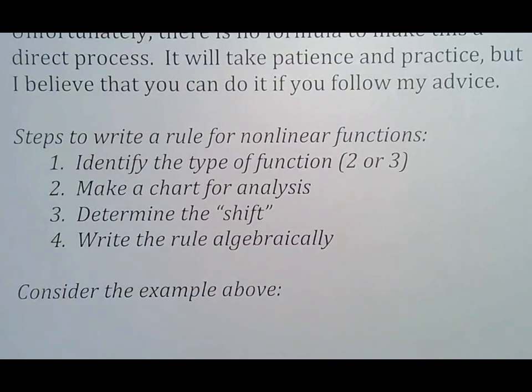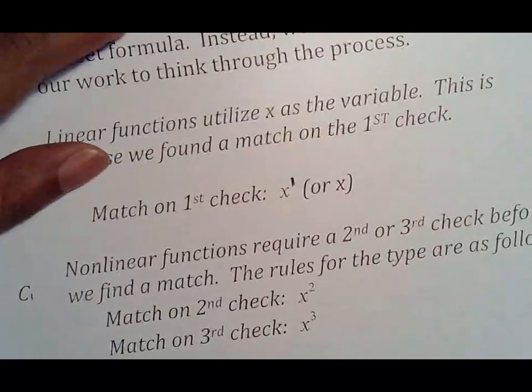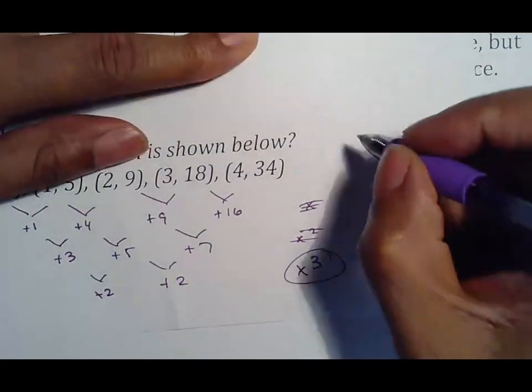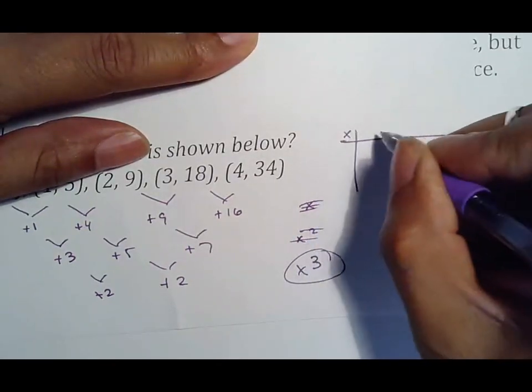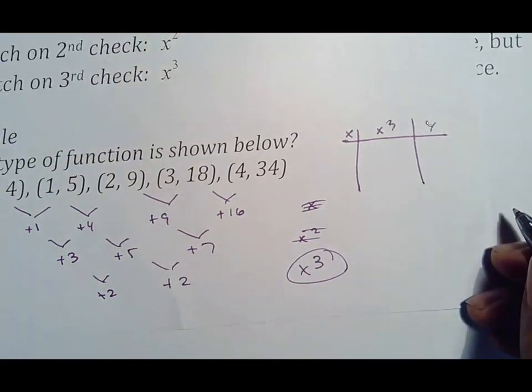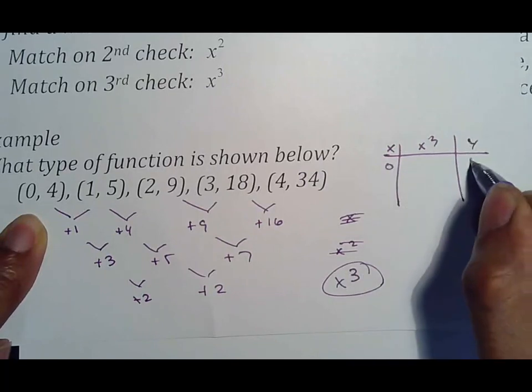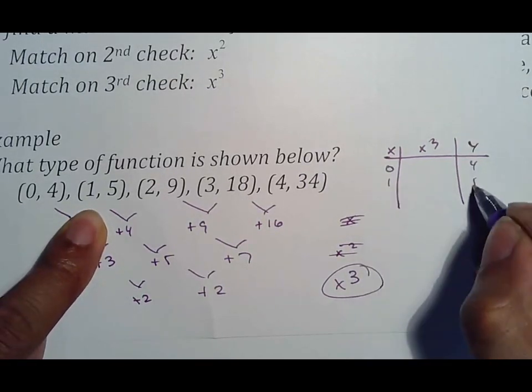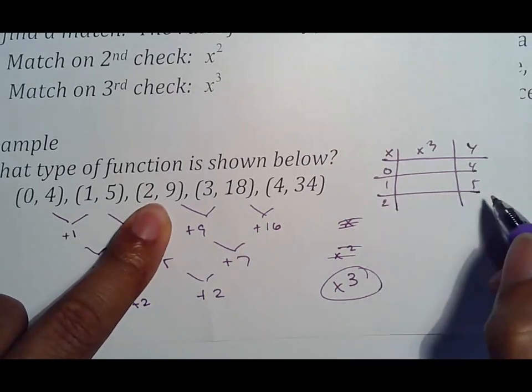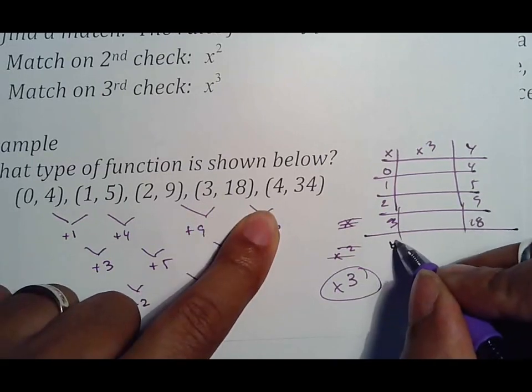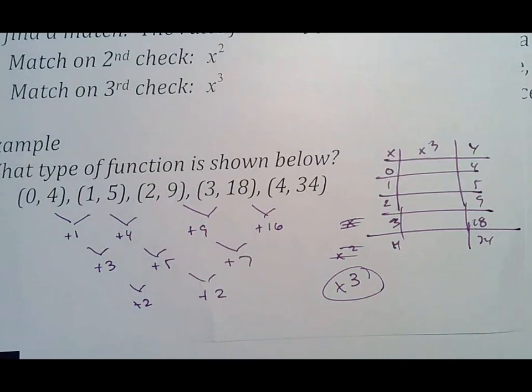Consider the example above. What we would have done is identify the type. This would be x to the third. So, what we would do now that we know it's x to the third is we would put a table with an x here, x to the third there, and a y there. And we would literally just copy the points. That's x and y. So, you'd put 0 here, 4 there. You would put 1 here, 5 there. 2 for x, 9 for y. We're just copying it over. 3 here, 18 there, and then finally 4, 34.